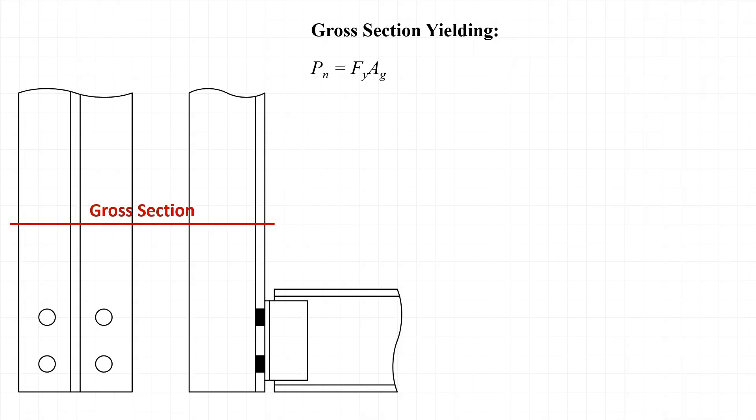Looking at the limit state of gross section yielding first, the nominal strength Pn is taken as Fy times Ag, the yield stress in material times the gross area of the section. Substituting in 50 ksi for Fy and 28 inches squared for Ag, we get a nominal strength of 1400 kips. Applying a resistance factor of 0.90 for gross yielding, we end up with a design resistance φPn of 1260 kips.